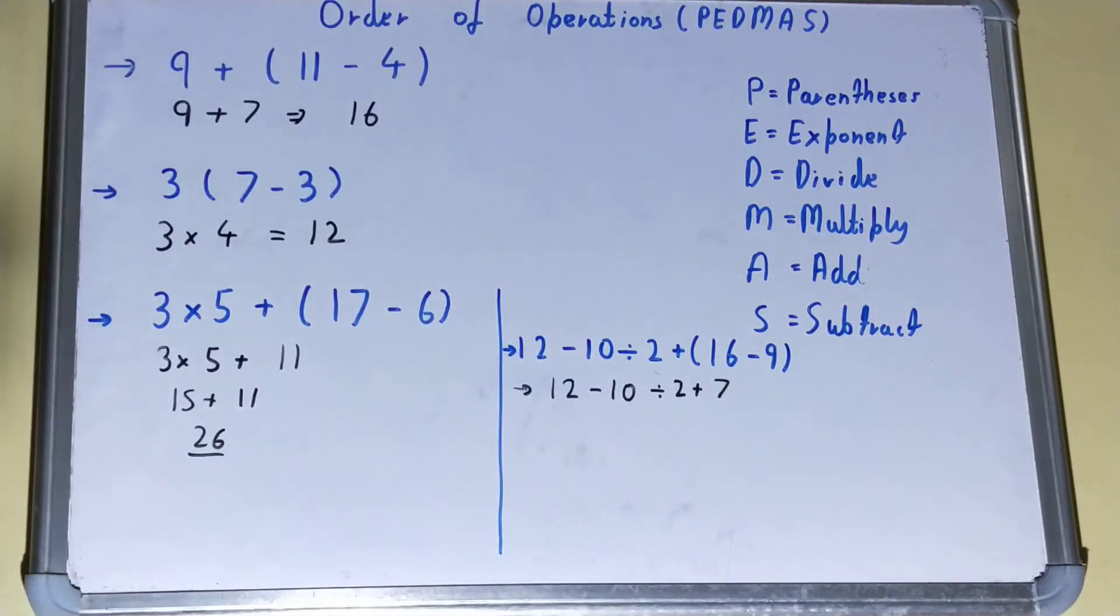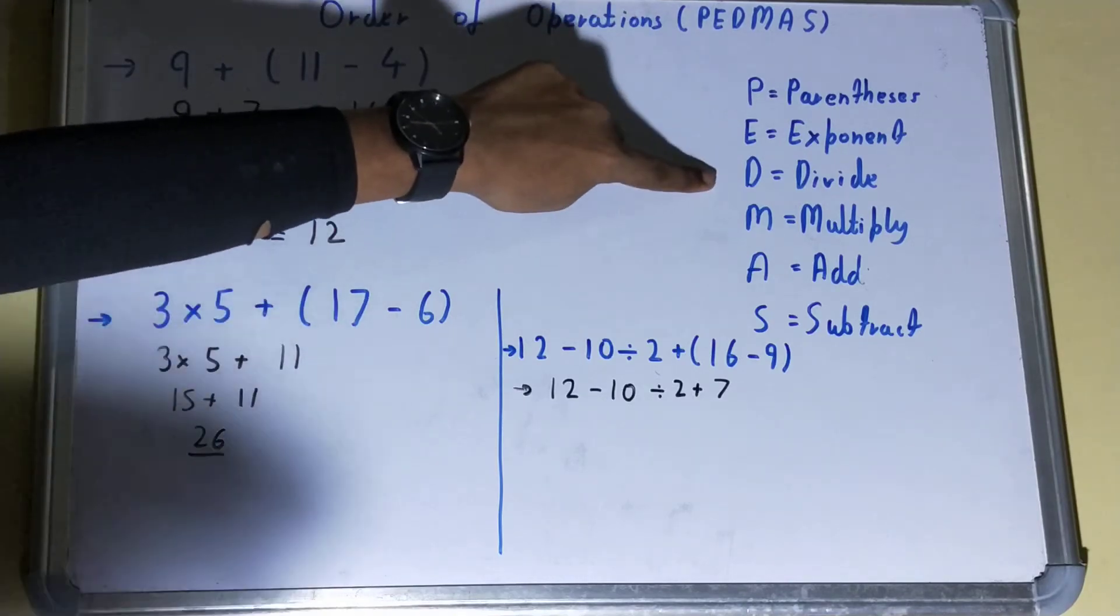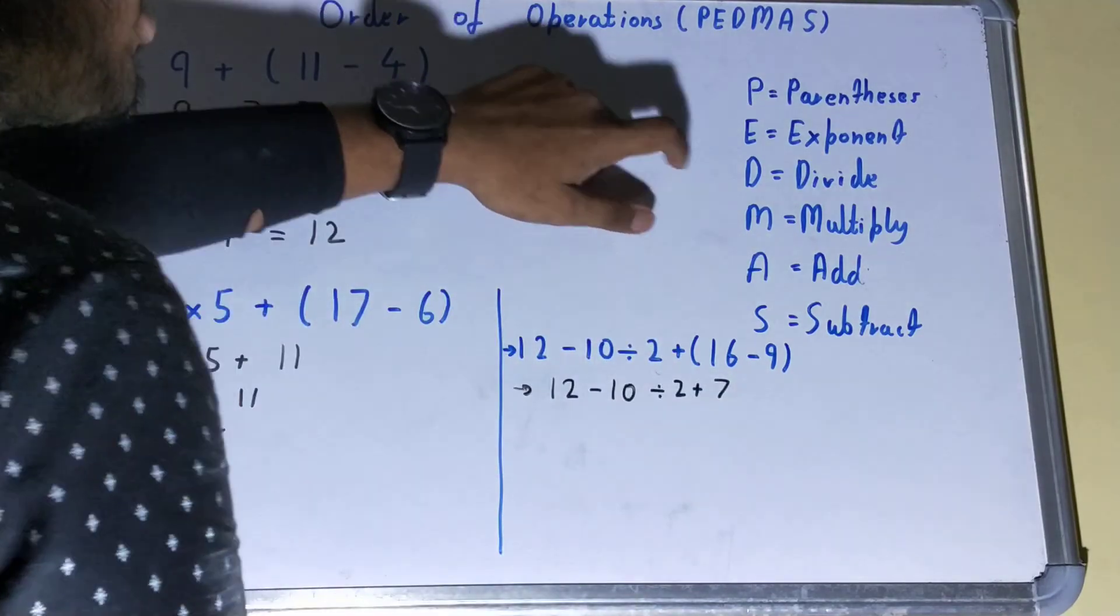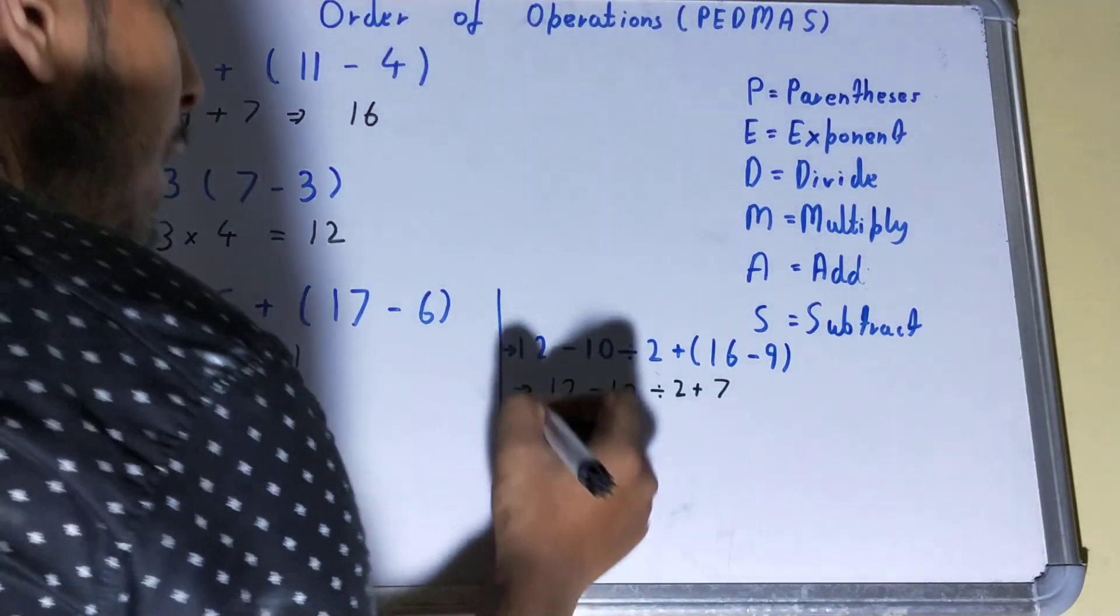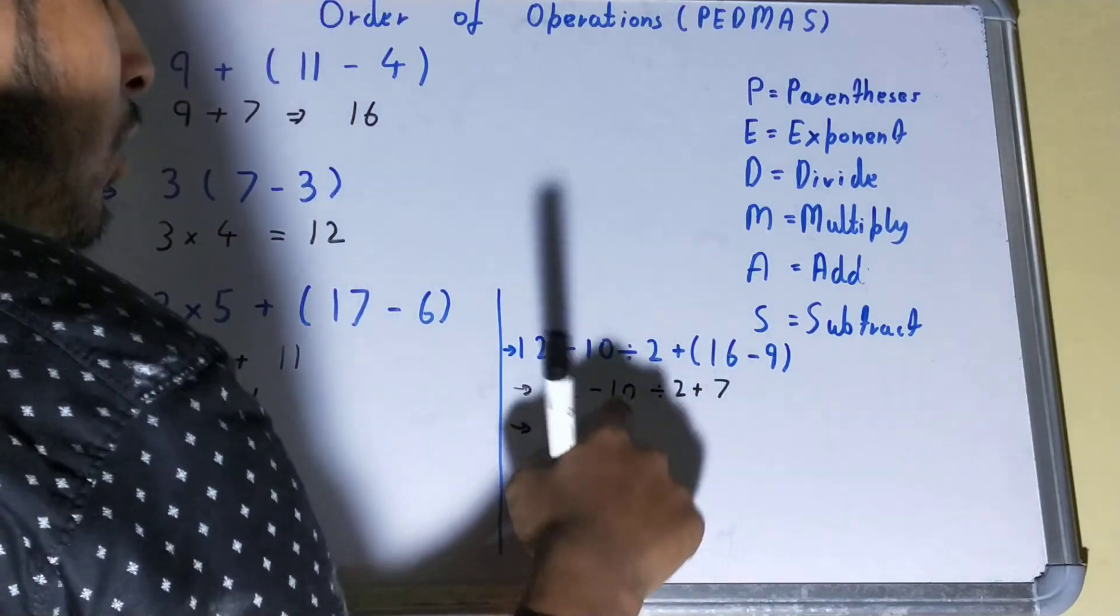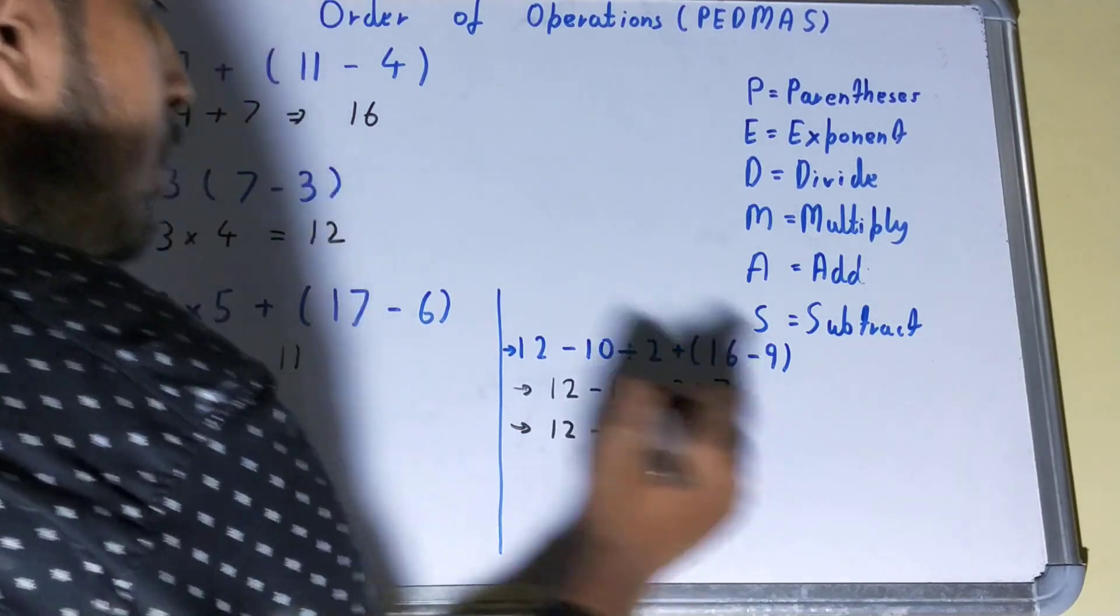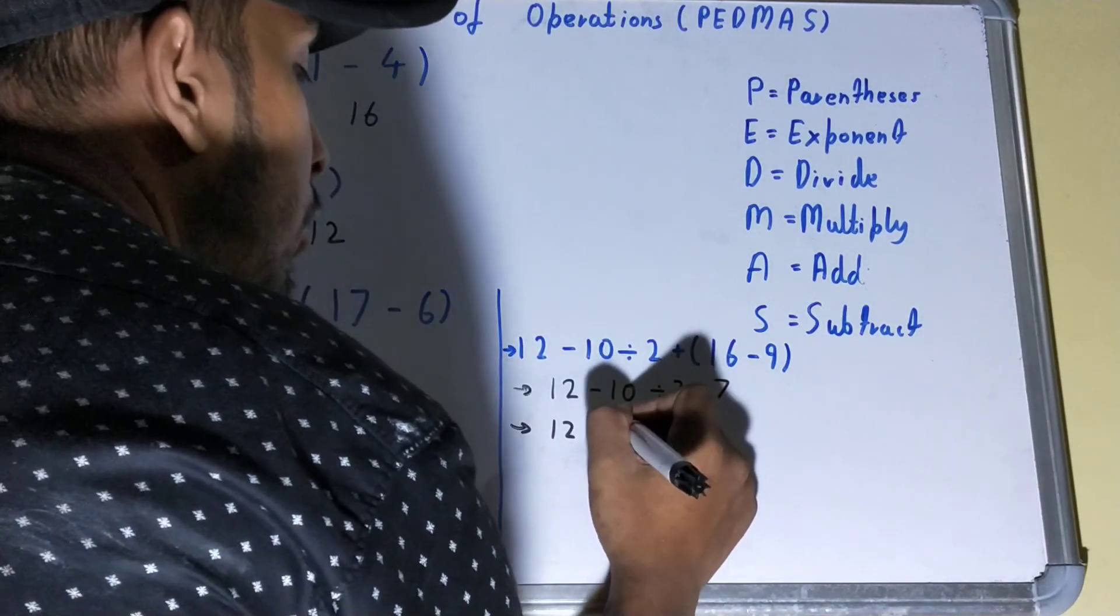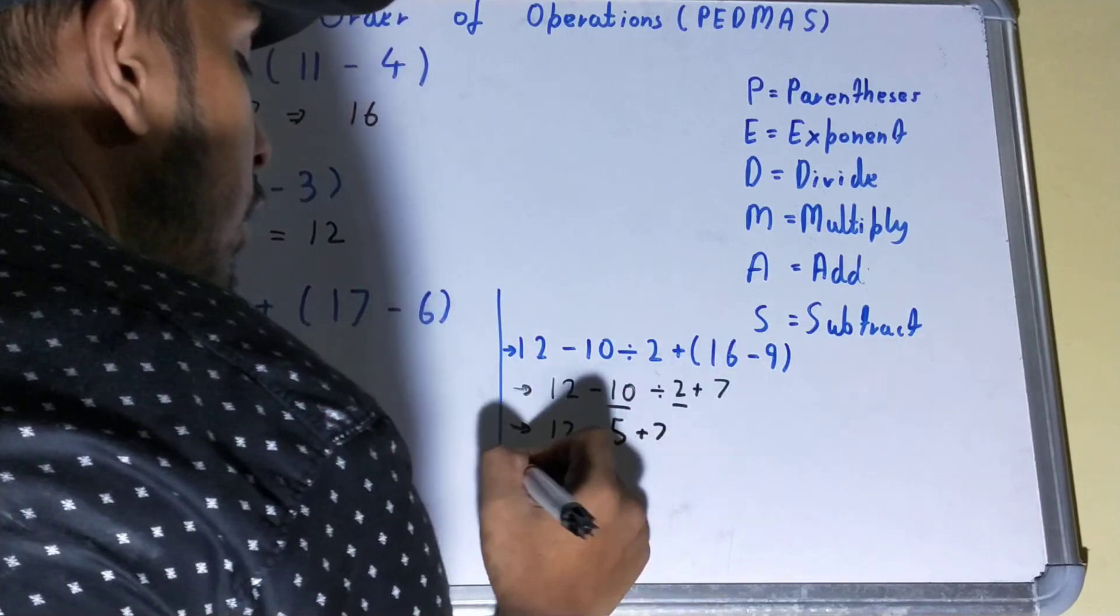Next you will see which one has the highest priority. If you see these symbols, you have division, minus, and plus, so division has the highest priority. So you will divide between these two terms. That is 10 ÷ 2 will be 5. So now we have 12 - 5 + 7. Now what we need to do? According to our rule, we need to add first, that is 12. Addition will happen between these two...